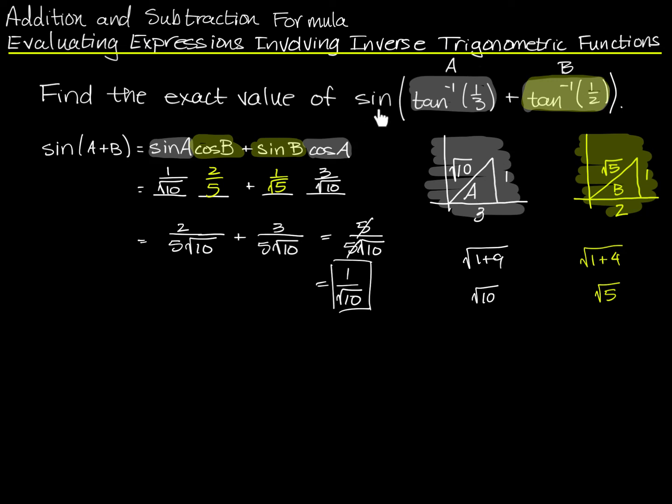Now, we've done a problem where we took the sine of the sum of two angles, both of which we had the tangent for. So the sine of a tangent inverse plus a tangent inverse. You could get the cosine of a tangent inverse plus a tangent inverse. You could get the tangent of a sine inverse plus a sine inverse. You could even get the sine of a cosine inverse plus a tangent inverse, for example.